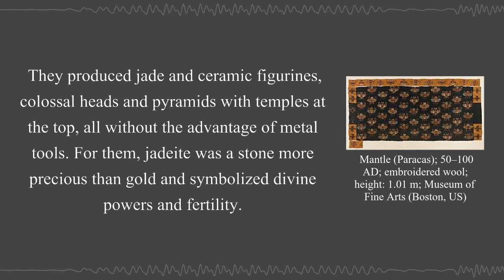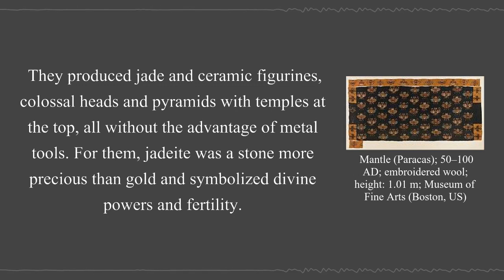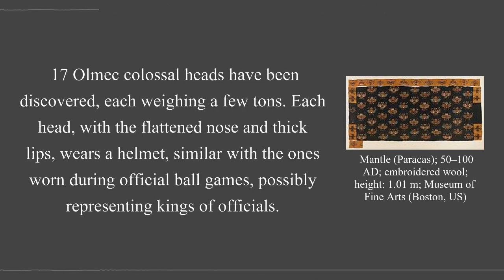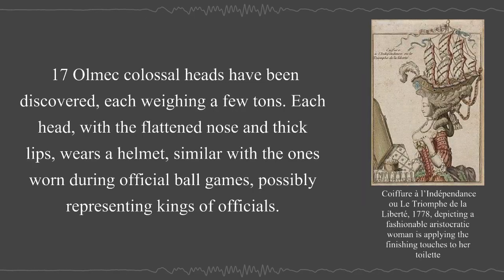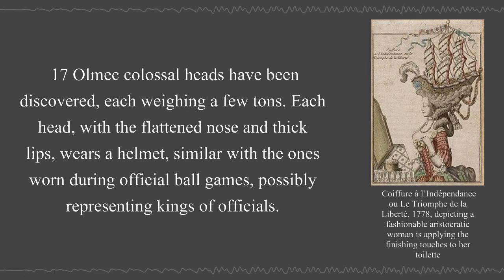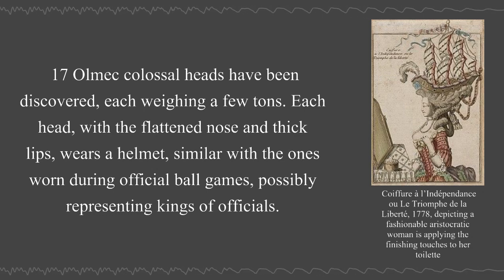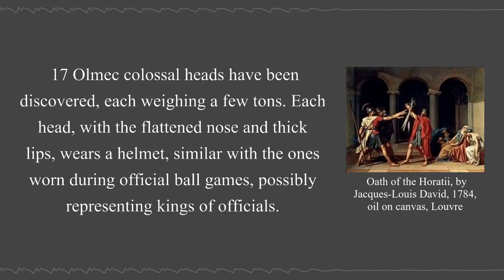For them, jadeite was a stone more precious than gold and symbolized divine powers and fertility. 17 Olmec colossal heads have been discovered, each weighing a few tons. Each head, with a flattened nose and thick lips, wears a helmet similar with the ones worn during official ball games, possibly representing kings or officials.